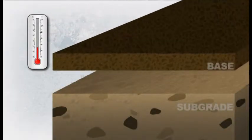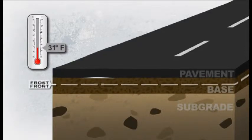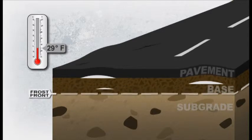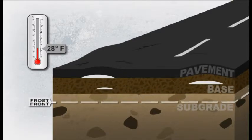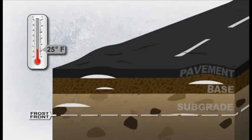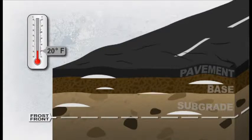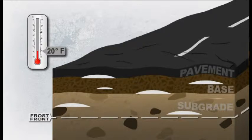This same frost action damages our roads. Just as in the laboratory experiment, when water is drawn into the soil and freezes, ice lenses begin to form from the top down. Because ice expands as it forms, the soil heaves upward until first bumps and then cracks form in the pavement. And just as in the laboratory experiment, as long as water is available and the temperature is at or below freezing, ice lenses continue to form deeper and deeper in the soil layers.